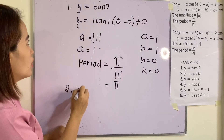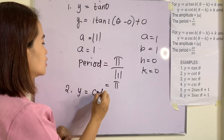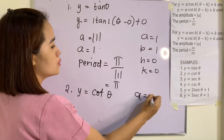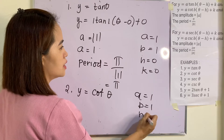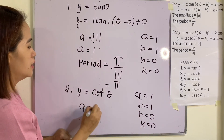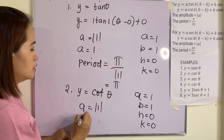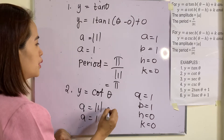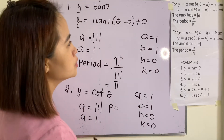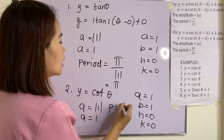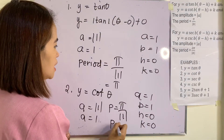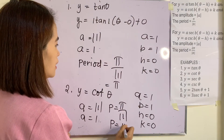Example 2: y = cot(θ). Again, a = 1, b = 1, h = 0, k = 0. The amplitude is |a| = |1| = 1, and the period is π/|b| = π/1 = π.